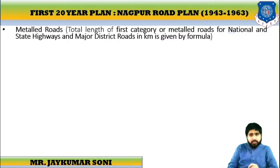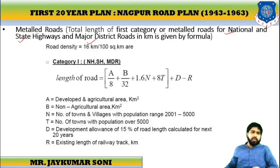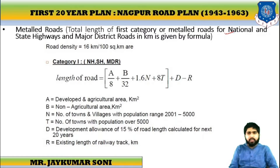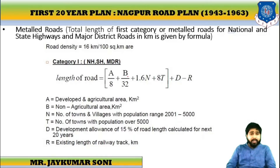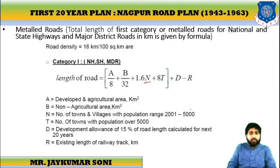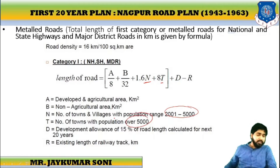For metal road, the road density is kept as 50 km per 100 sq km. The equation is: A/8 + B/30 + 1.6n + 8t + D − R, where B is 15% of the total value, R stands for existing railway track length, A stands for agricultural area, B stands for non-agricultural area, n stands for towns with population between 2,000 and 5,000, and t stands for towns with population more than 5,000.